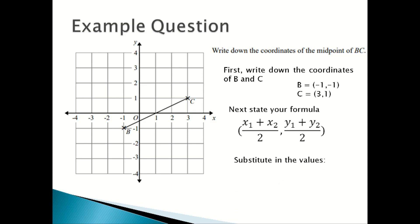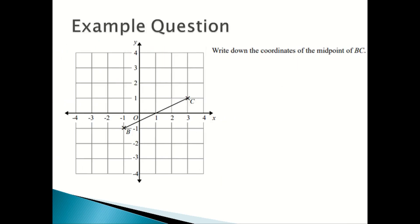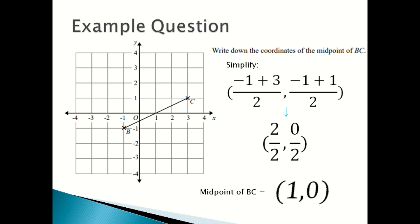You substitute in the values: (-1 + 3)/2 and (-1 + 1)/2. You simplify the fractions and it becomes 2/2, 0/2. So the midpoint of BC is (1, 0).